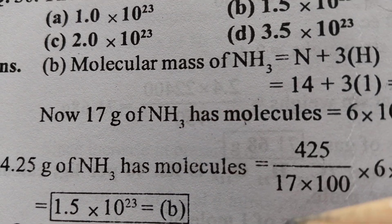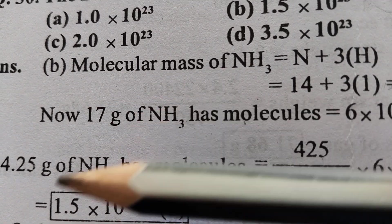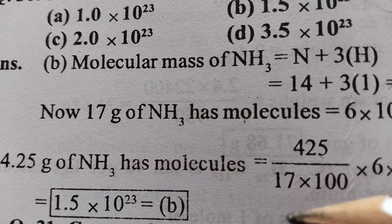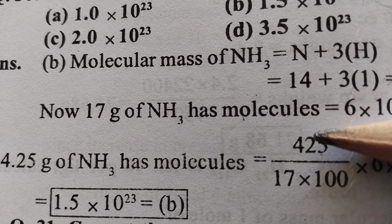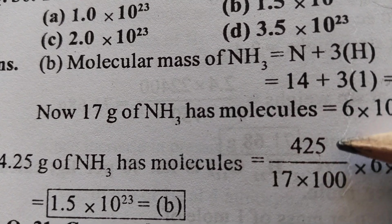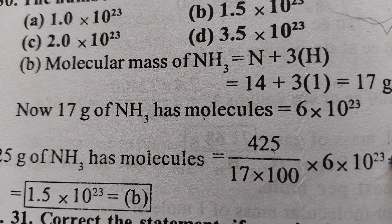Generally less than number of molecules. This is 17, this is 4.25, so less than that number. So 4.25/17 × 6 × 10²³.